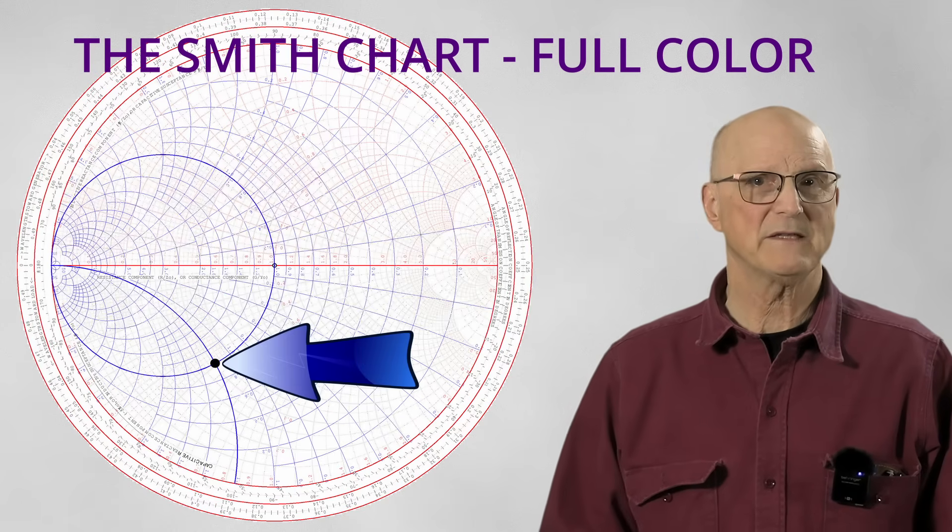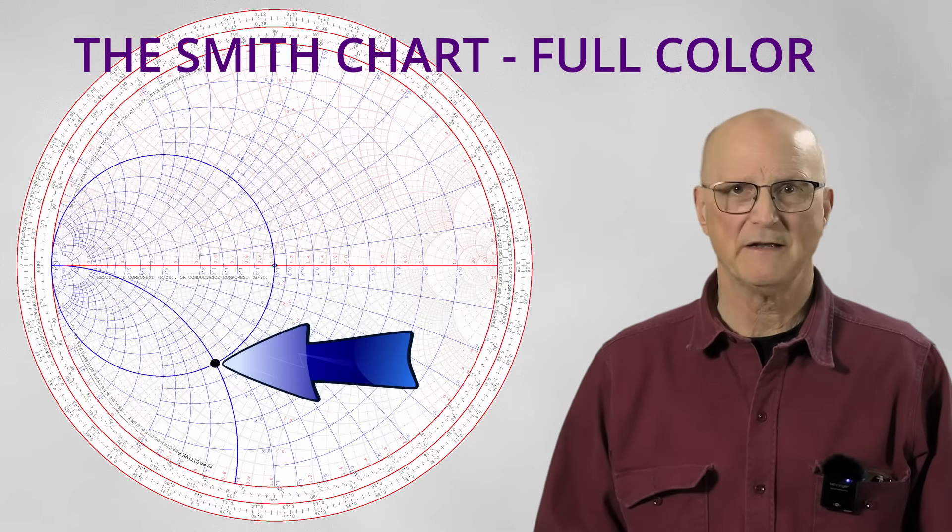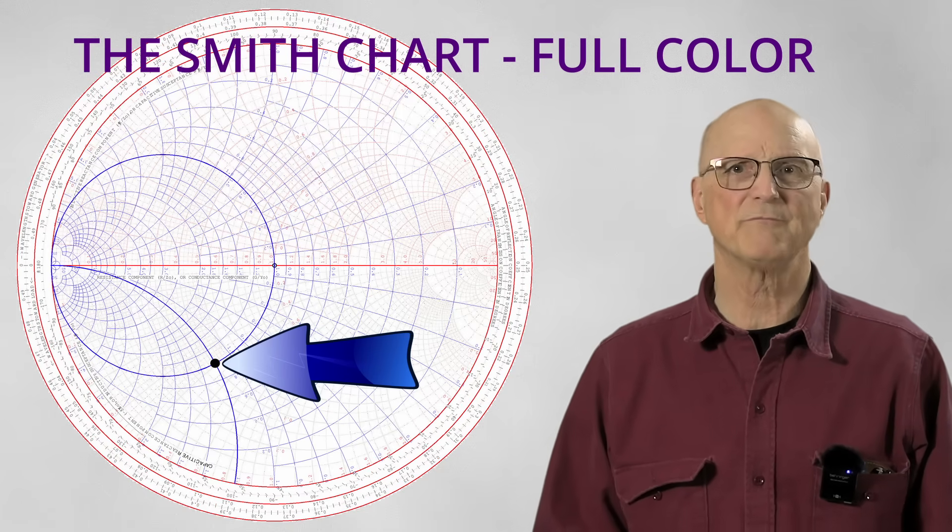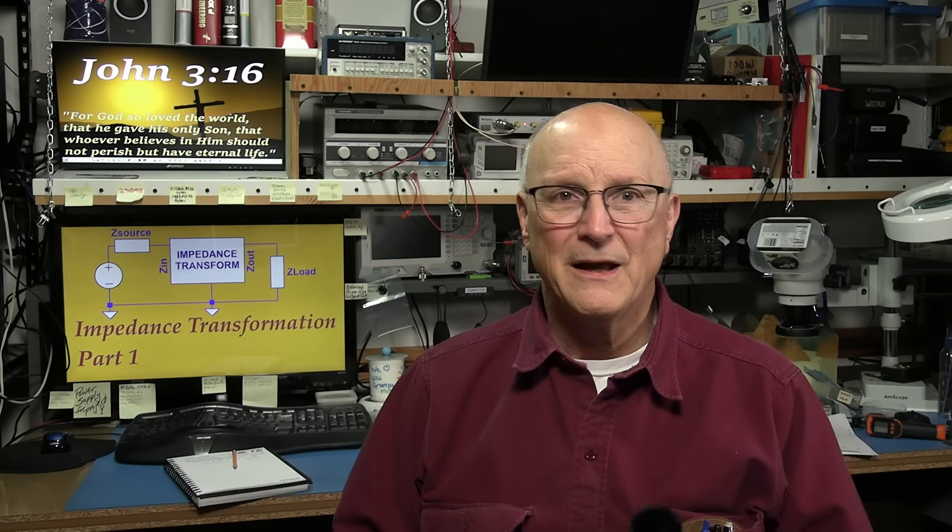Now, did you notice the change in the sign of the reactive portion between the impedance and the admittance? We plot the admittance values on the Smith chart in the same way we plotted the impedance values, except we use the blue lines to do it. Well, with this introduction under our belts, we're ready to dive into designing impedance matching networks using the complete color Smith chart.